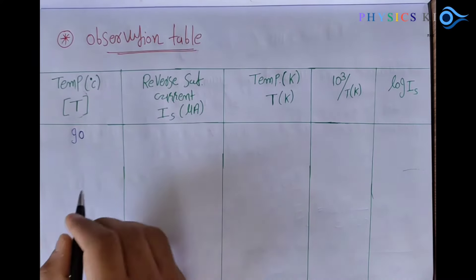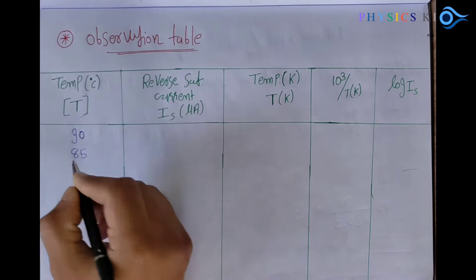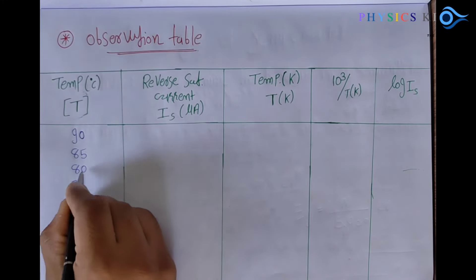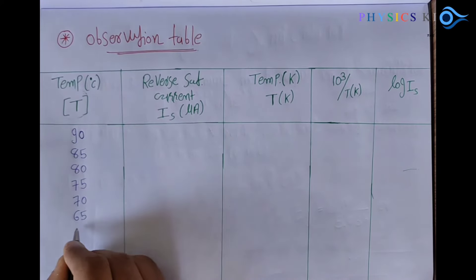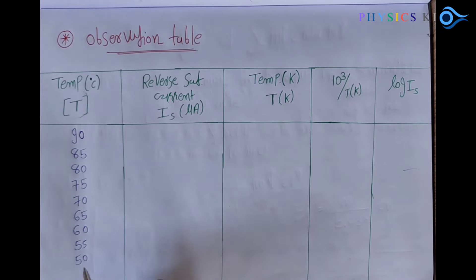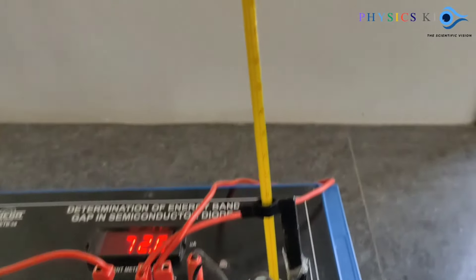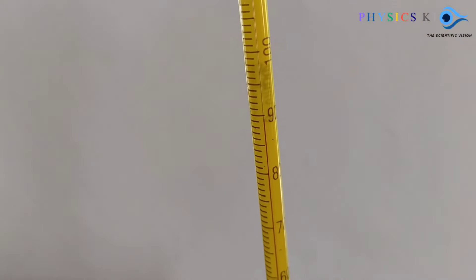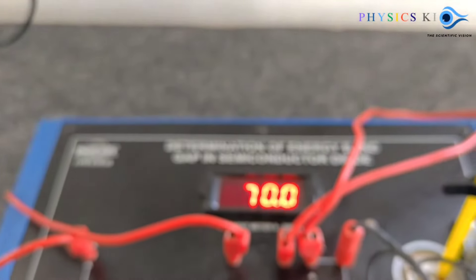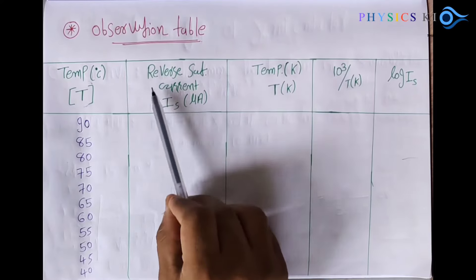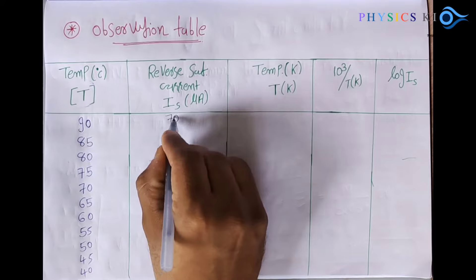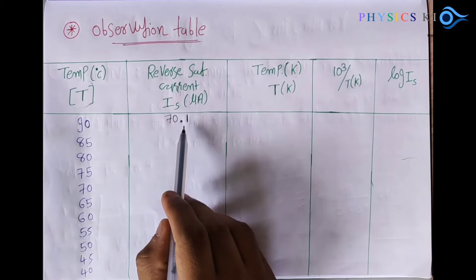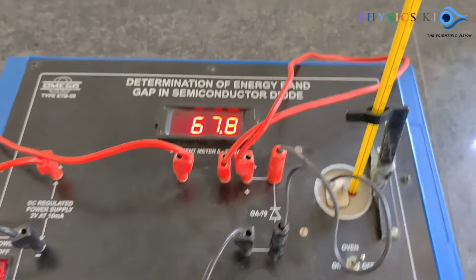We are waiting for the temperature to reach 90 degrees Celsius. After that I will turn off the oven, and the temperature will gradually decrease: 90, 85, 80, 75, 70, 65. According to each temperature we will measure the reverse saturation current. Now I turn off the oven. The temperature is almost 90 degrees Celsius, and at 90 degrees I measured 70.1 microampere current.